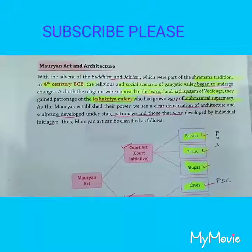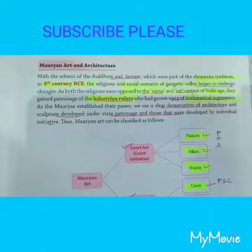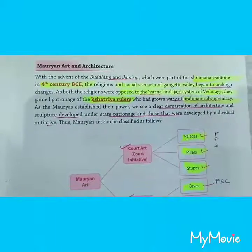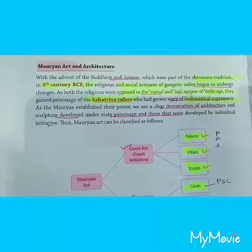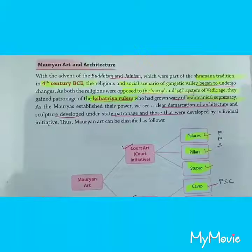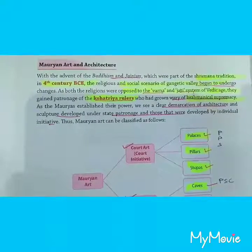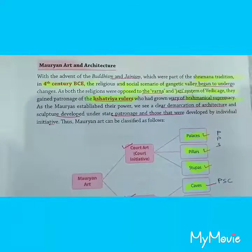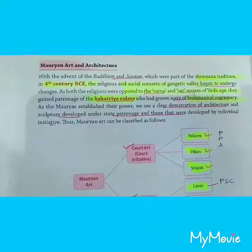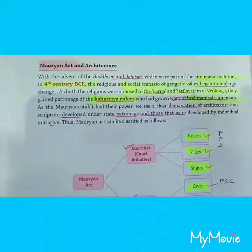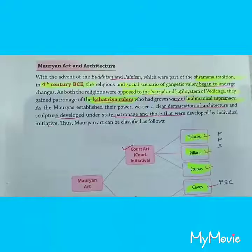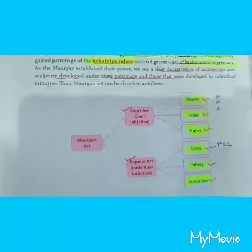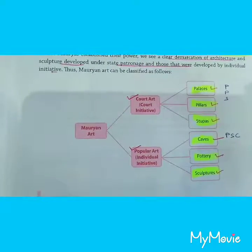With the advent of Buddhism and Jainism, which were part of the Shramana tradition in the fourth century BC, the religious and social scenario of the Gangetic Valley began to undergo changes. Both Buddhism and Jainism were opposed to the Varna and Jati system of the Vedic age, and so they gained the patronage of Kshatriya rulers who were quite opposed to Brahmanical supremacy.